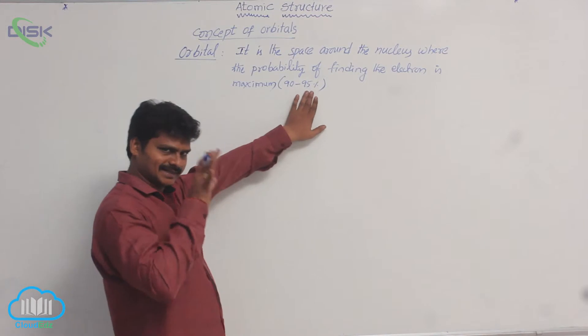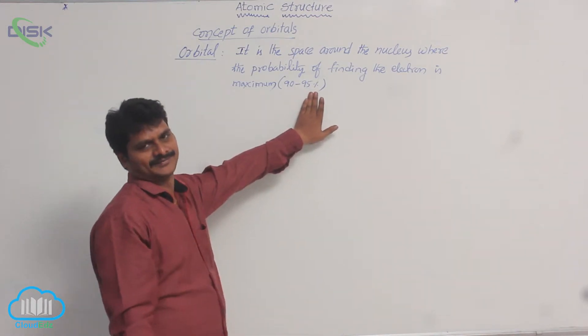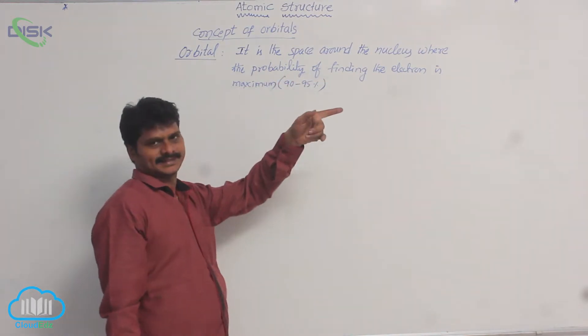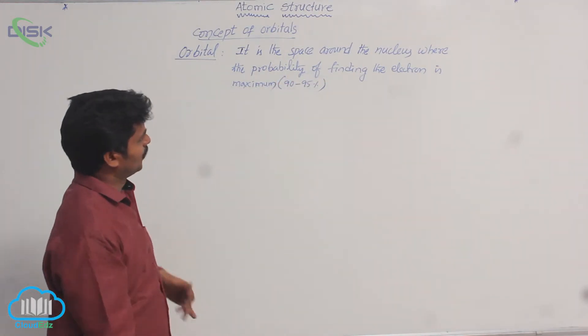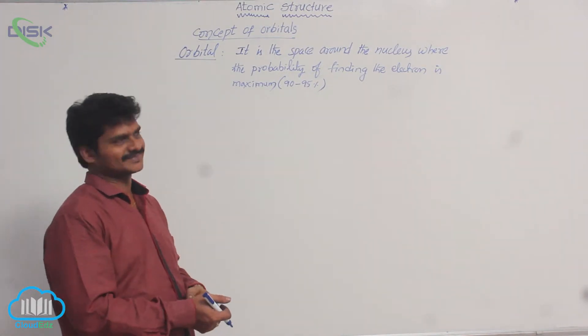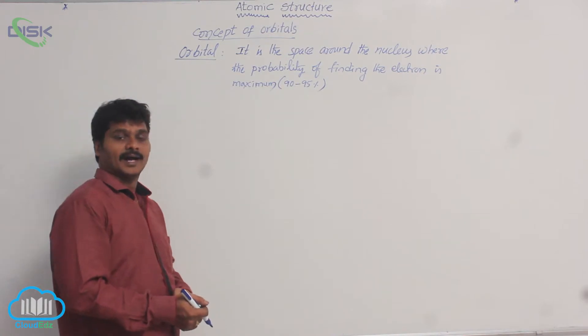That is why we consider only up to 90 to 95 percent. So that space around the nucleus where the probability of finding the electron is maximum 95 percent is called orbital.